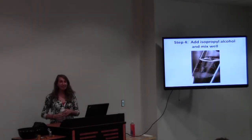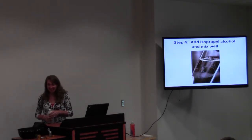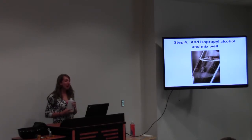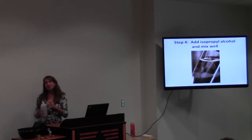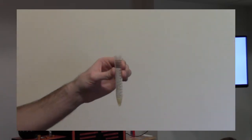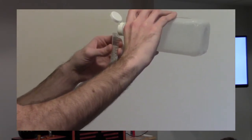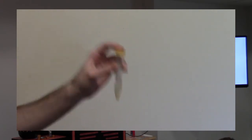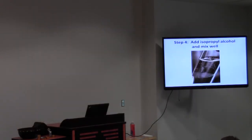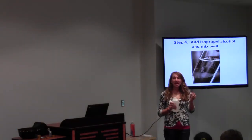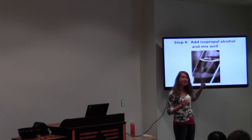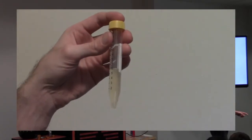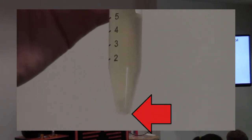The last step before we actually get to see our DNA — which is really exciting — is adding some isopropanol to your mixture. Your DNA really likes water, so when it's in water you can't see it. But DNA does not like isopropanol, so once it's added, the DNA will try to get away from the isopropanol and we'll be able to see it. Once you start shaking this, you should see some white stringy material — and that is the DNA from yourself.